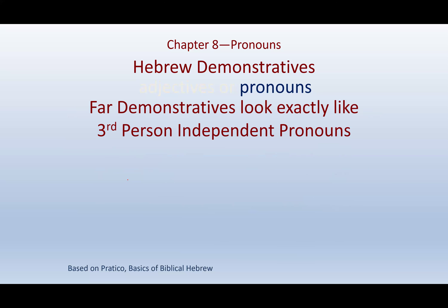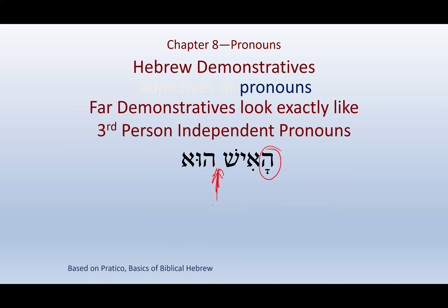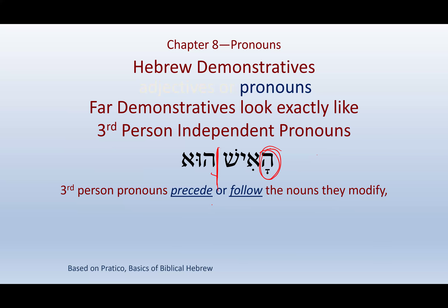The far demonstratives look exactly like third person independent pronouns. So with 'Ish Hu' — if it follows the noun — you check: is there an article? Here there's an article on Ha-ish but no article on Hu — they don't match in definiteness — so we add 'is': he is the man. Third person pronouns precede or follow nouns they modify, agree in gender and number, but not definiteness — they are never definite. Context and placement tell you whether it's a pronoun or a far demonstrative.